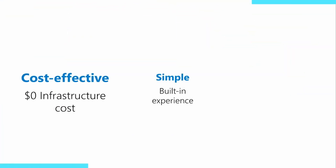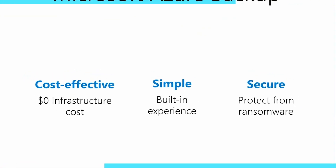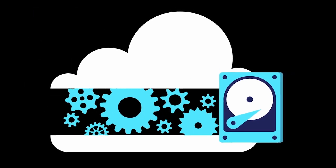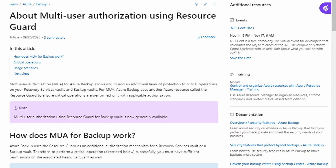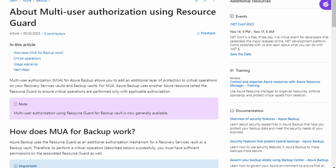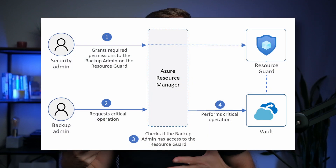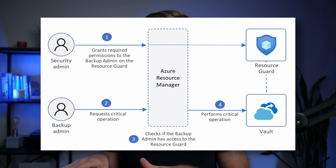Microsoft is adding an extra layer of security to Azure Backup Vaults. This is technology already implemented for recovery services vaults, now being brought across to Azure Backup Vaults — it's called multi-user authentication, or MUA. MUA puts a resource guard in front of the backup vault to provide an extra step that users need to go through in order to access it. Microsoft is doing this because backups are crucial when ransomware hits — if ransomware reaches your backup vault too, you're really in trouble. For maximum security, you can place the resource guard in a different Azure tenant entirely.